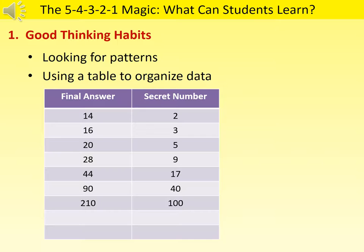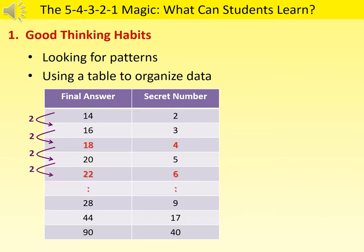To look for patterns, students can test other numbers like 18, 22, and 24 to notice the relationship between the two sets of numbers. An increase of two units in the final answer will result in an increase of one unit in the secret number. This might lead students to think of the idea of halving.